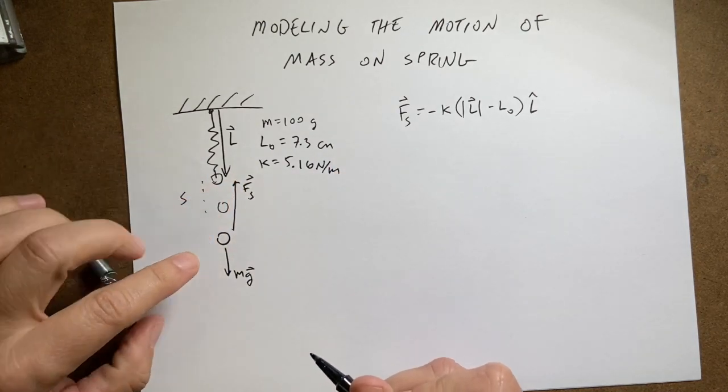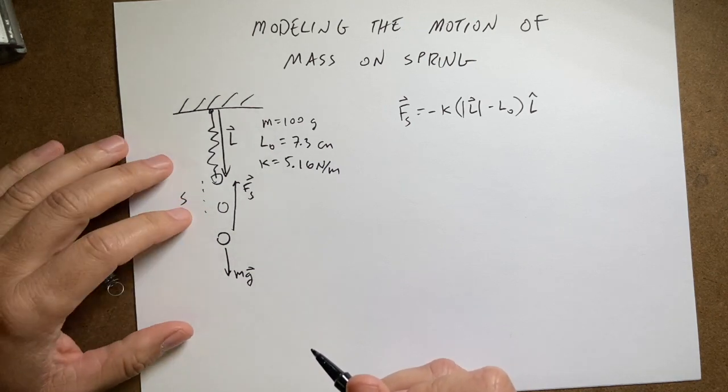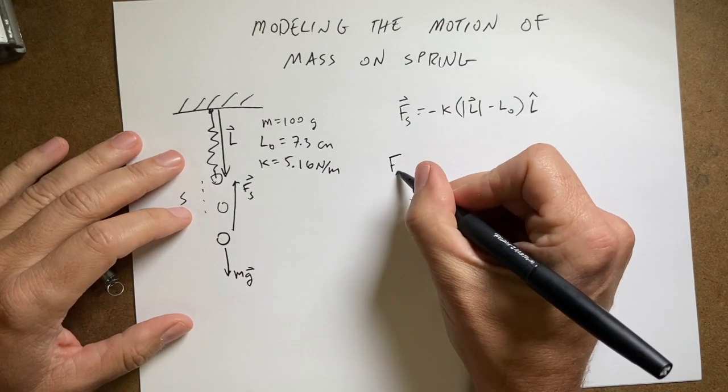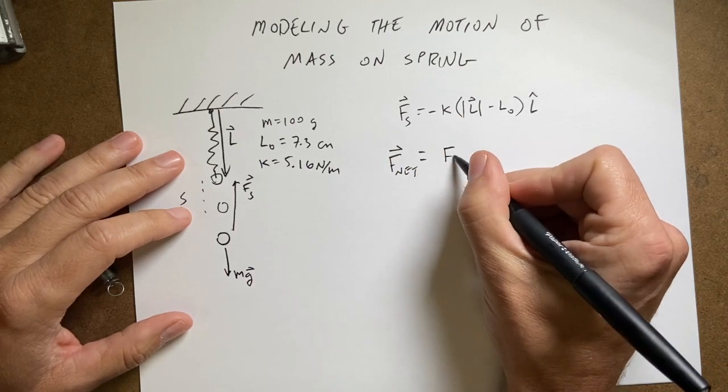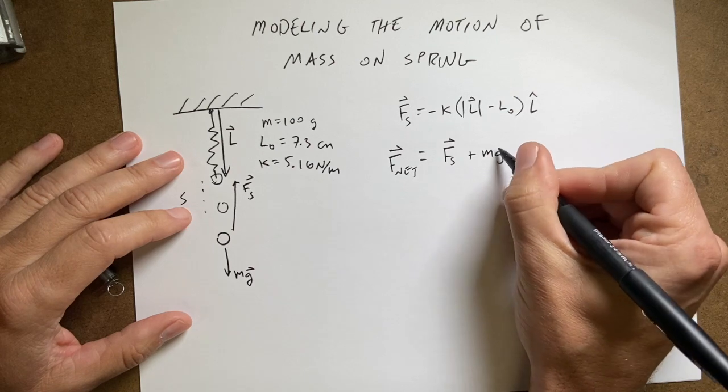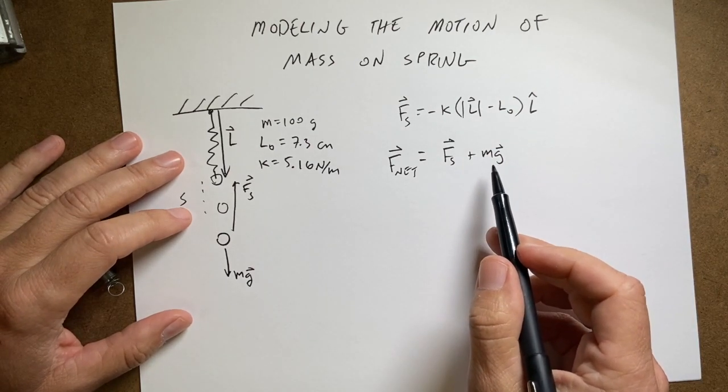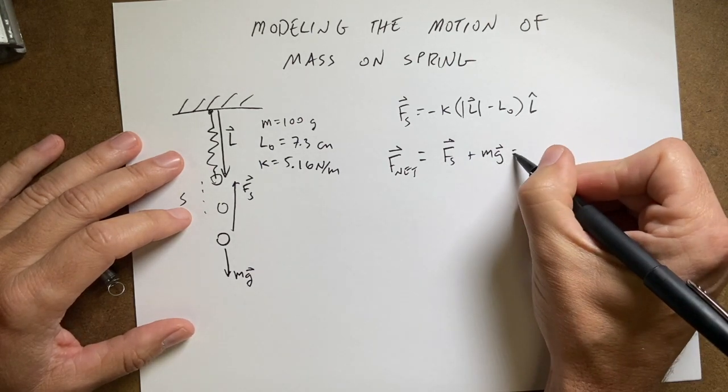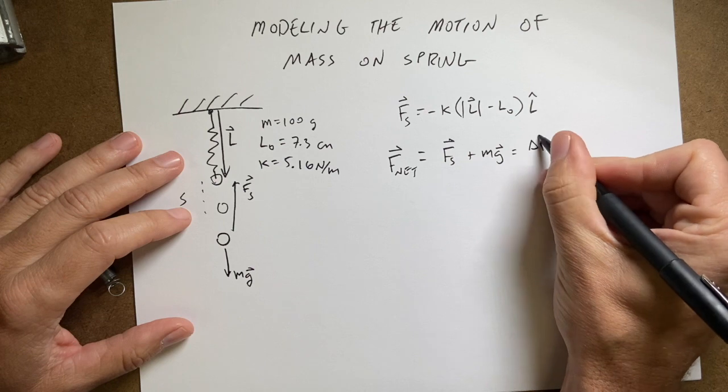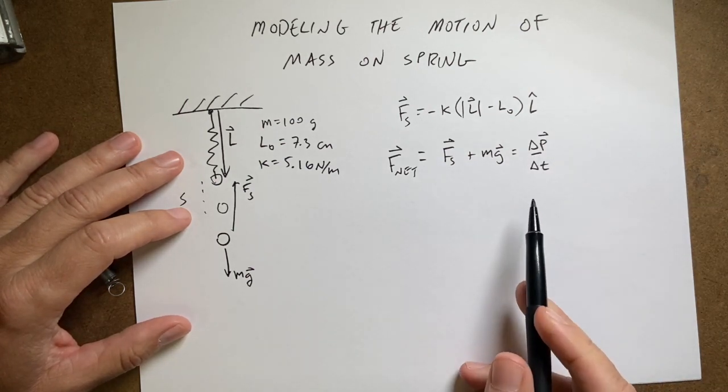And the spring force is going to be greater than the gravitational force if I pull this down. So then I can say F net equals Fs plus mg and it's plus because g is the gravitational field vector. It has a negative y component but we still add the vectors this way. And this is going to be equal to delta p over delta t, the change in momentum with respect to the change in time.